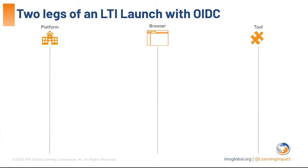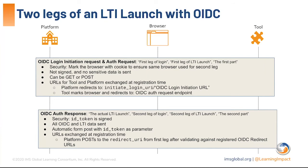In LTI 1.1, when you did an LTI launch, you would go directly from the platform to the tool. With OIDC, this becomes a two-leg launch. There's a first part where the platform goes to the tool and says it wants to do an LTI launch, giving the tool an opportunity to set a cookie for the platform to address potential security problems. After that handshake, the actual LTI launch happens as the second leg. This causes a lot of confusion in LTI Advantage, and there are many names people use for each leg.